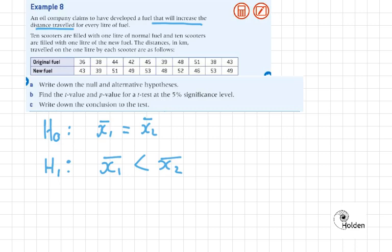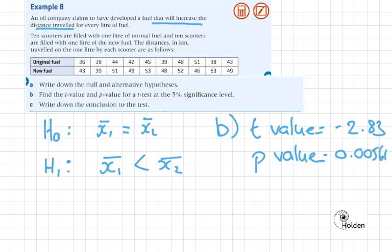Next video will be on the GDC which will bring us these values. The p-value is 0.00561, so it's teeny tiny.